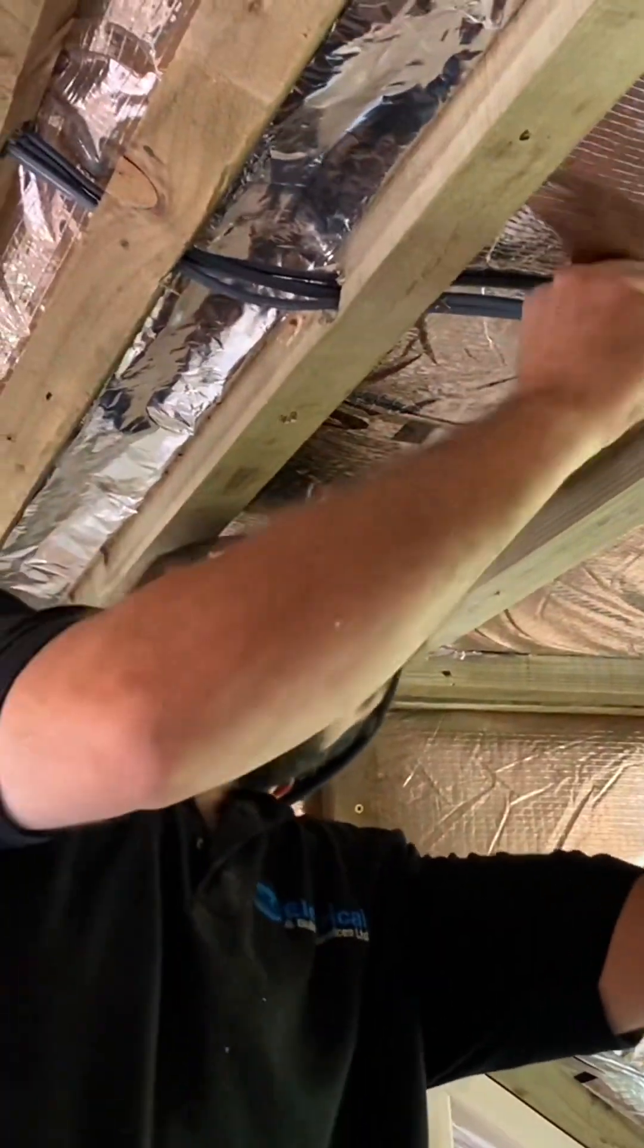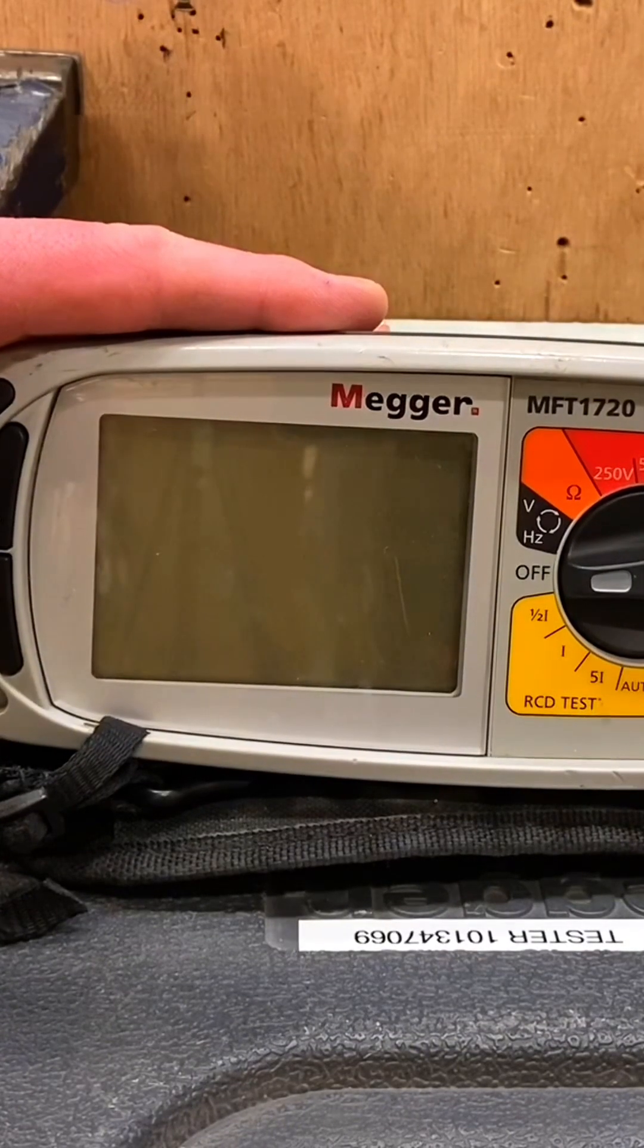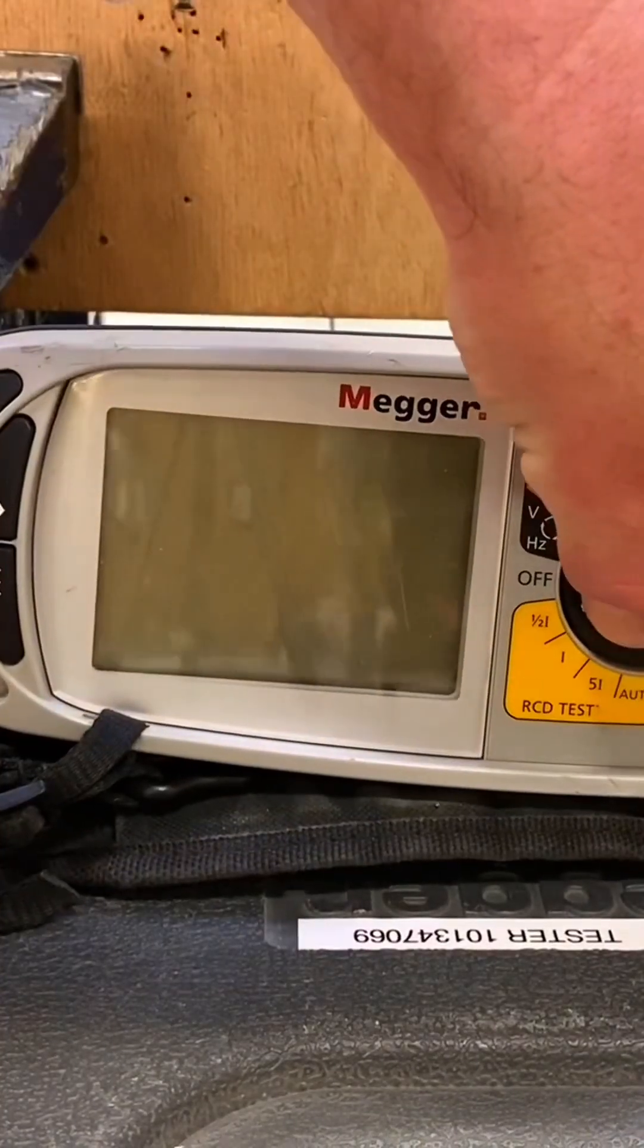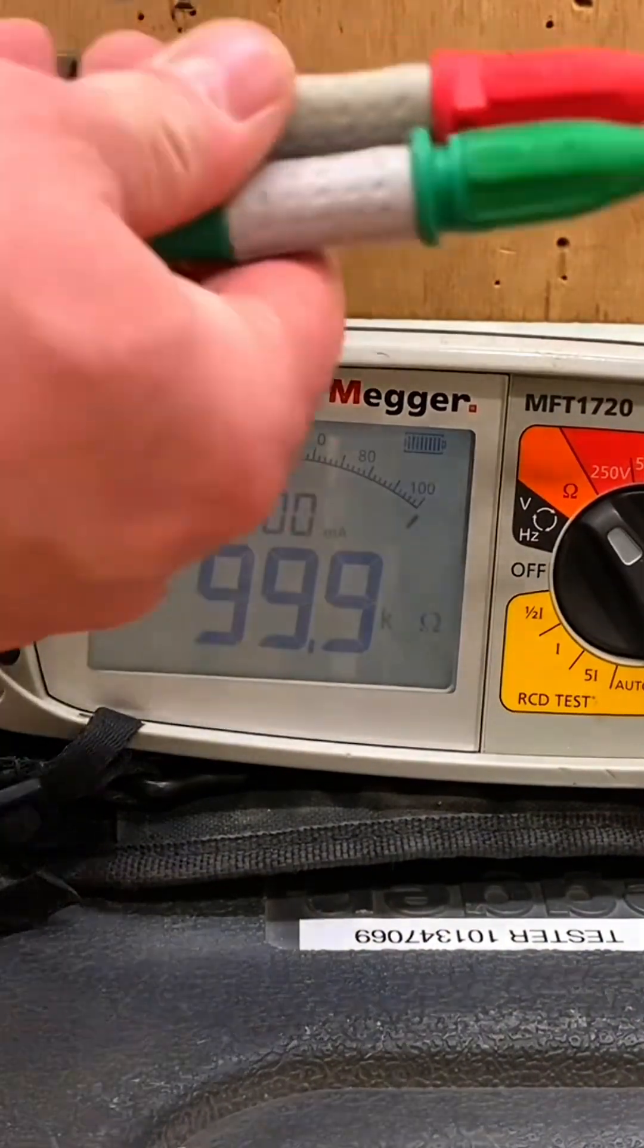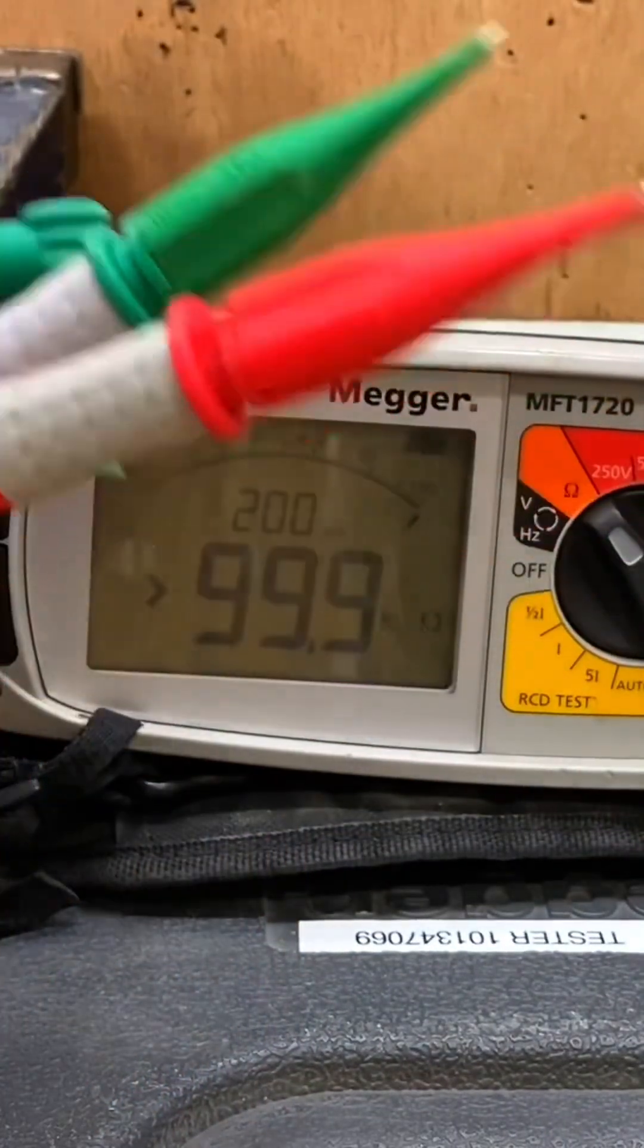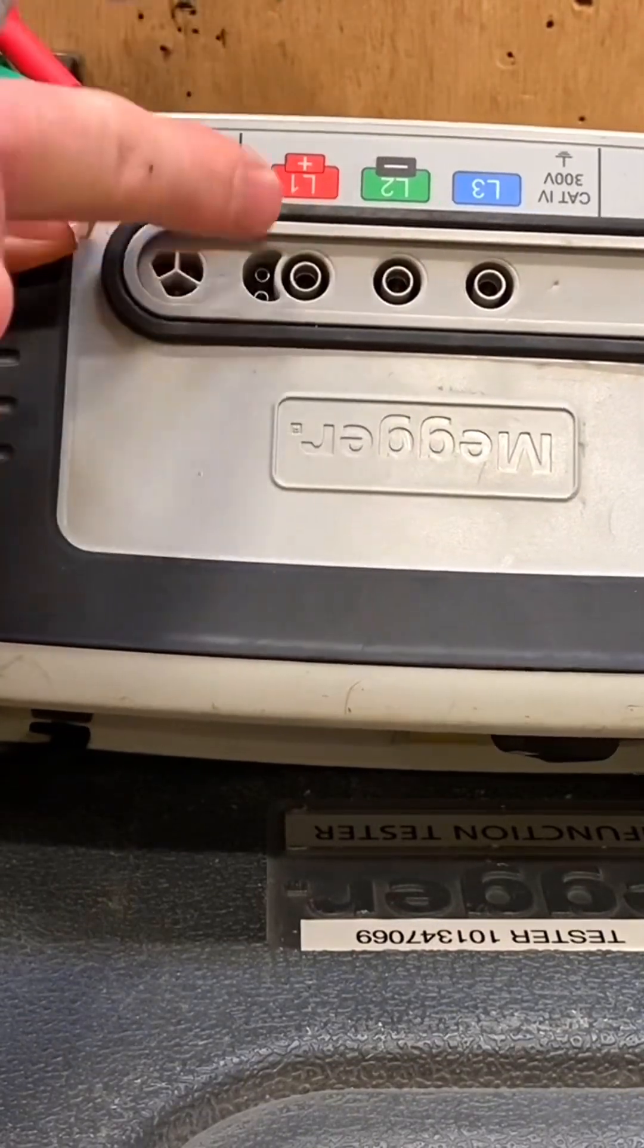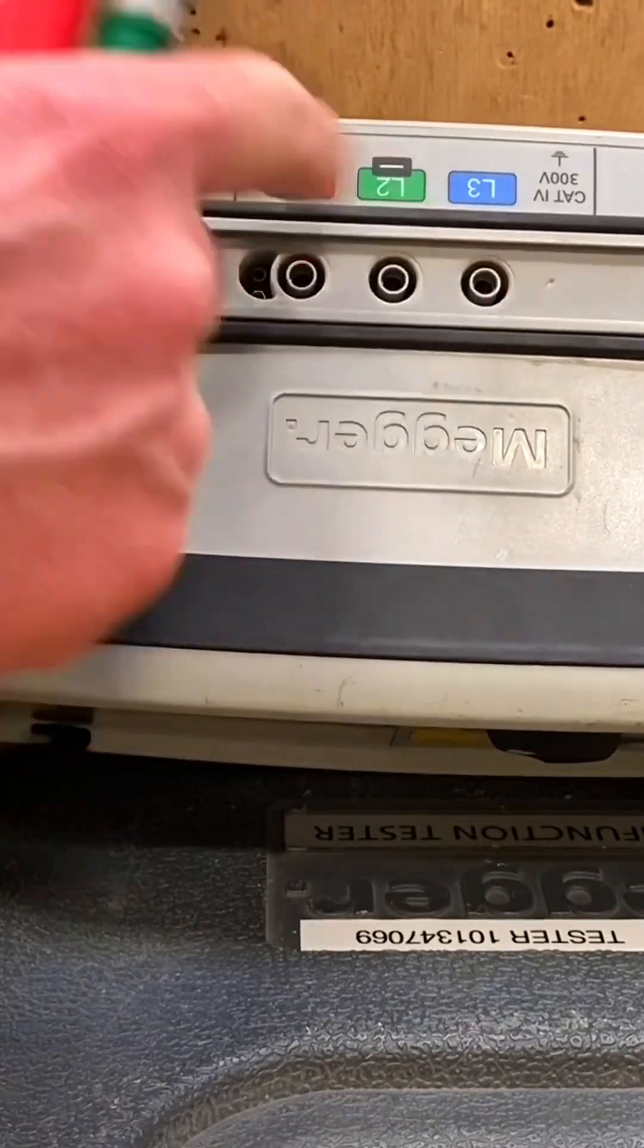Let's set up our Megger MFT to measure the continuity of the CPC test. We're measuring the resistance of the conductor, so we need to move it to the orange scale for ohms. We insert our leads - we generally use the red and green ones in the correct slots at the top. We ignore the blue one at this stage, we'll get back to that on the level three apprenticeship.